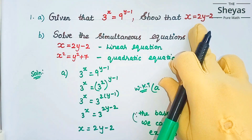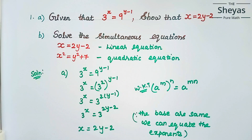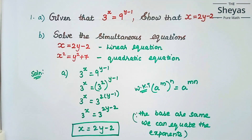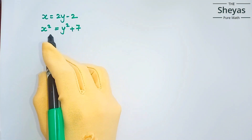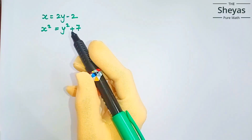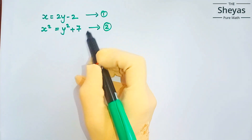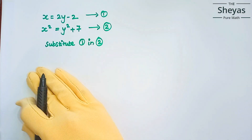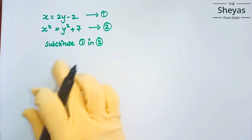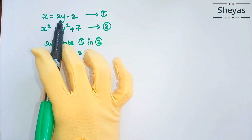We have proved x = 2y − 2. Now let us solve the problem. The given equations are x = 2y − 2 (equation 1) and x² = y² + 7 (equation 2). We are going to apply the substitution method — substitute equation 1 into equation 2.